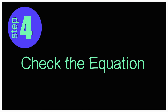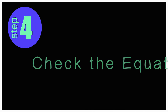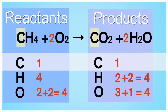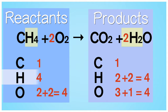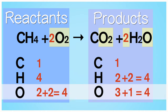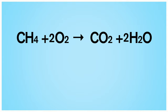Step 4: Checking the equation. Let's look at the equation to see if all coefficients will work. If both sides are equal, you have now balanced the chemical equation. If they are not equal, rework your multiplication. Here, there are 1 carbon atom, 4 hydrogen atoms, and 4 oxygen atoms on both sides. This equation is chemically balanced.